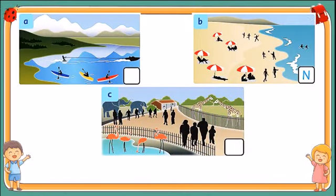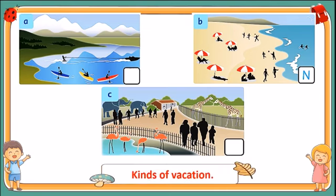Now students, look at the pictures. What are these pictures about? They are about some kinds of vacation. Look at picture A — it's a lake near the mountains and the people are sailing. Picture B is a beautiful beach where some people are having fun. And picture C is a zoo where some people are going to see animals. Very good, students!